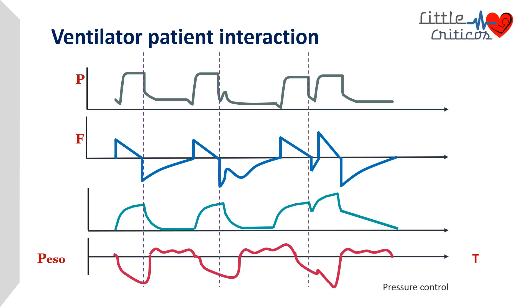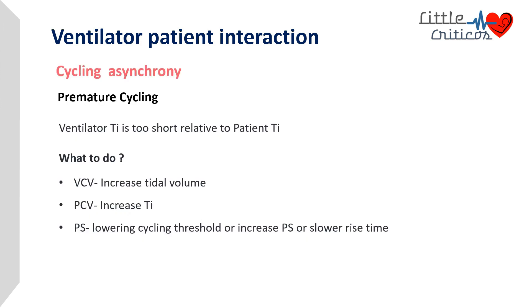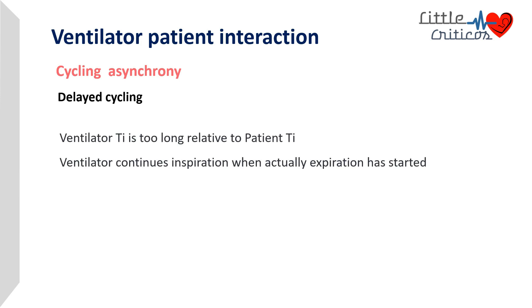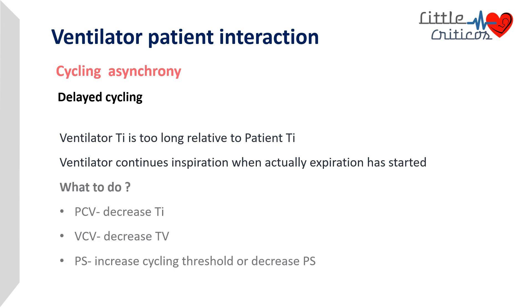Though classically described as double triggering, it is actually the result of premature cycling. To overcome premature cycling in volume-control mode, increasing tidal volume can increase inspiratory time. In pressure support, lowering the cycle threshold, increasing pressure support, or using a slower rise time can help reduce premature cycling. Delayed cycling results when the ventilator inspiratory time is too long relative to the patient's inspiratory time. It can be overcome by decreasing inspiratory time in pressure-control ventilation, decreasing tidal volumes in volume-control ventilation, and increasing the cycling threshold in pressure-support mode.